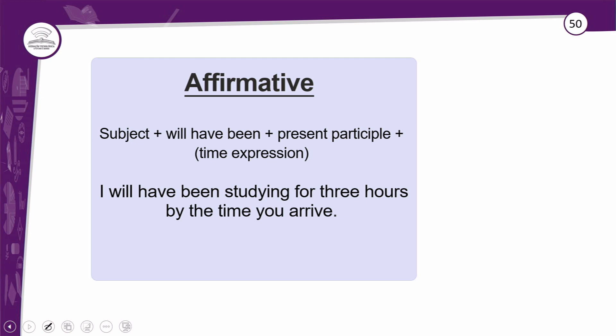Na affirmative form, na forma afirmativa: subject — sujeito — will have been (que é fixo), plus present participle — que é o verbo com ING. Por exemplo, 'study' com ING vira 'studying'. Claro que nem sempre é só colocar ING depois do verbo — você aprendeu nas aulas de perfeitos contínuos que há regrinhas para seguir na escrita. Logo em seguida pode ter uma time expression e o complemento da sua frase.